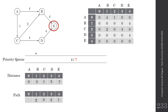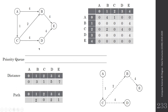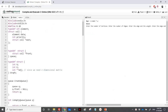We move to E, which has no adjacent vertices, so we are finished. At the end we have the Dijkstra shortest path tree. In the distance table we have all distances from the starting vertex to all nodes, and in the path array we know from which vertex each node was reached. Let's move to the implementation.